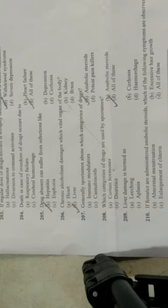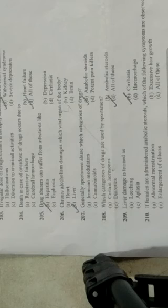Liver damage is termed as: A. Leaching (leech therapy using Hirudo medicinalis), B. Cirrhosis — correct — C. Aplasia, D. Hemorrhage. Cirrhosis, or liver cirrhosis, is correct. Last question of this chapter: If females are administered anabolic steroids, which symptoms are observed? A. Abnormal menstruation — correct, as hormonal imbalance leads to abnormal cycles. B. Excessive hair growth — correct. C. Enlargement of clitoris — correct. So the answer is all of these.